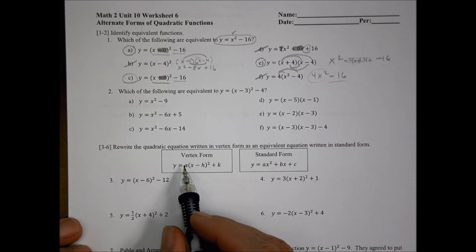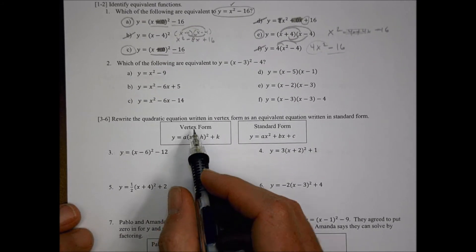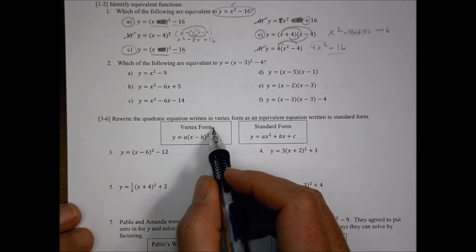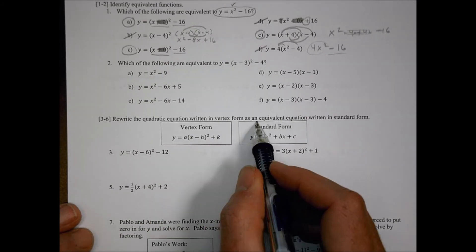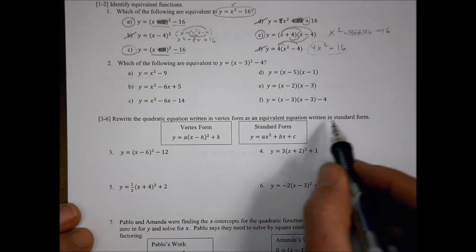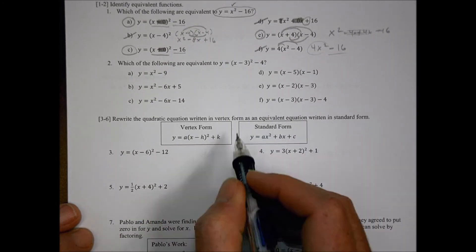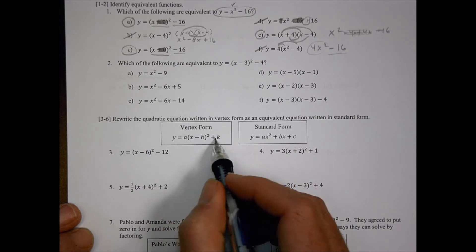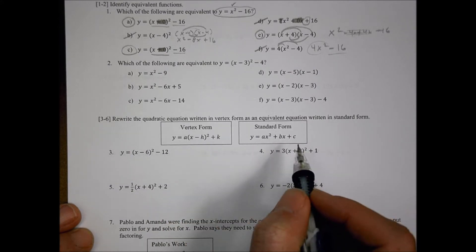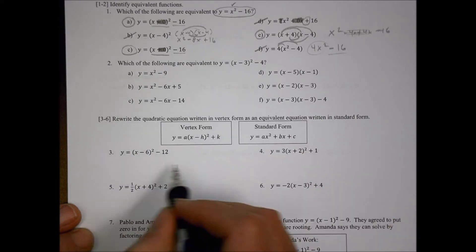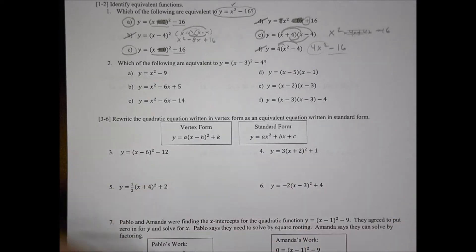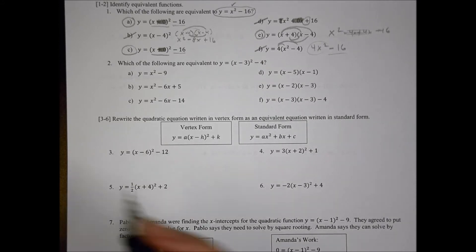Down here it says rewrite the quadratic equation written in vertex form as an equivalent equation written in standard form. So we're turning from vertex form into standard form — we'll multiply things out, switch things around, and combine like terms. Let's do some odd-numbered ones together.